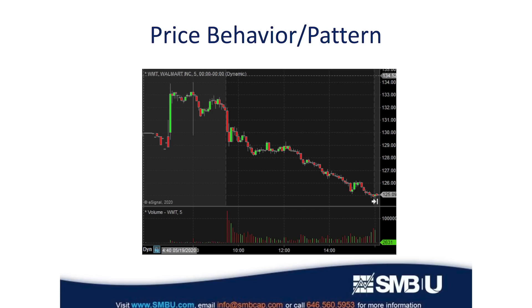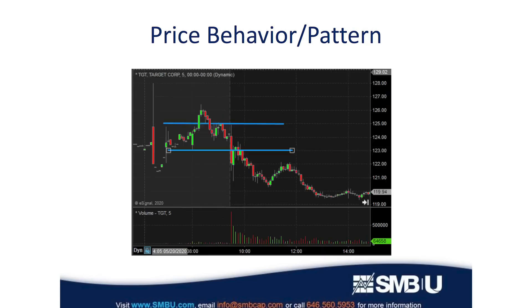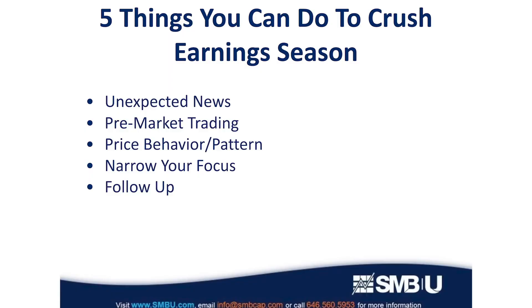The next day Target reported — a similar company in a similar industry. We looked to see if the first move on the open was down, and it was. 123 was a key level. Once it held below 123, we played it short, and it went all the way down to about 119. That's an example of similar price behavior and pattern transferring between companies in the same industry during earnings season. Number four: narrow your focus.